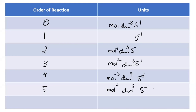You can see a trend from order 0 to 5. The power of mol goes: 1, then decreases — 0 for order 1 (just s⁻¹), then −1, −2, −3, −4. Similarly, dm power changes by 3 each time. So in general, for order n, the units of k are mol^(1−n) dm^(3n−3) s⁻¹.